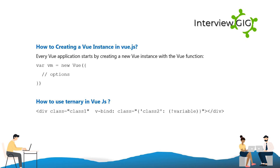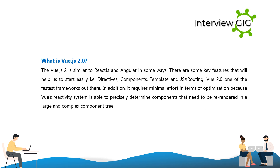What is Vue.js 2.0? Vue.js 2 is similar to React and Angular in some ways. Key features that help developers get started easily include directives, components, templates, JSX, and routing. Vue 2.0 is one of the fastest frameworks available, and it requires minimal optimization effort because Vue's reactivity system is able to precisely determine which components need to be re-rendered in a large and complex component tree.